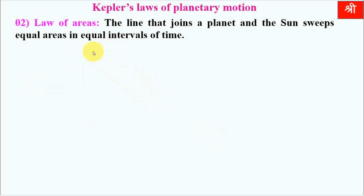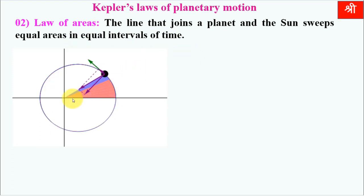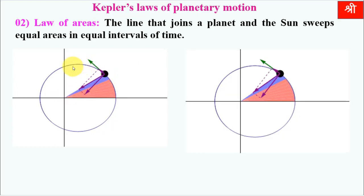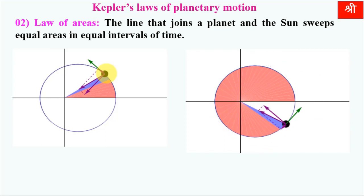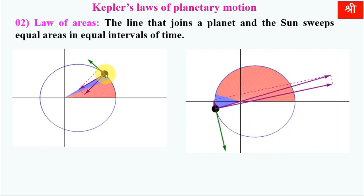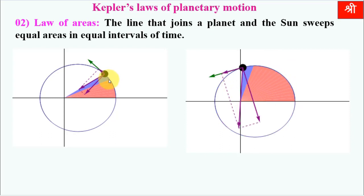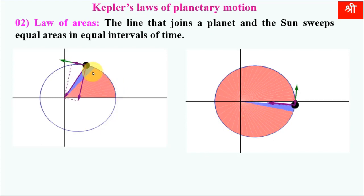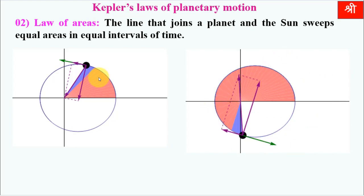Now Kepler's second law, which is called the law of areas. The line that joins a planet and the sun sweeps equal areas in equal intervals of time. This means that as the planet moves in its elliptical orbit, the area swept by the line joining the planet to the sun in a given time interval is always equal.